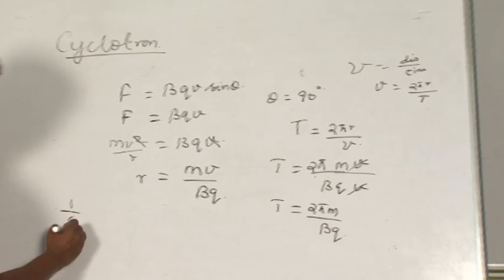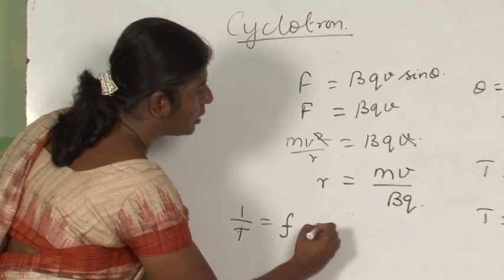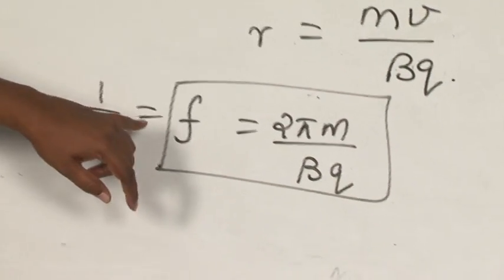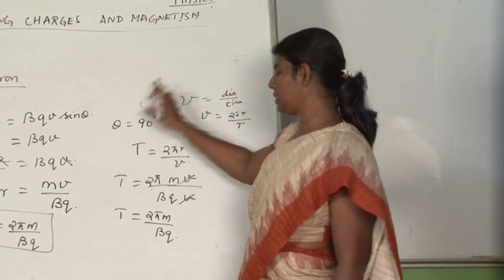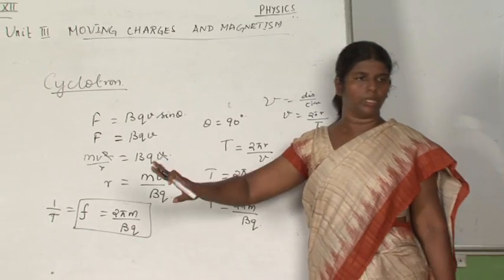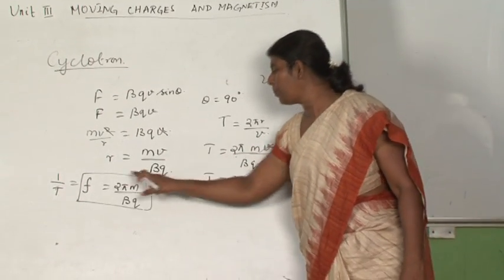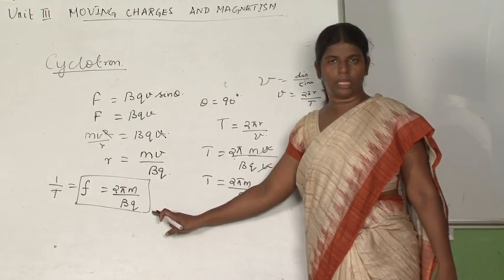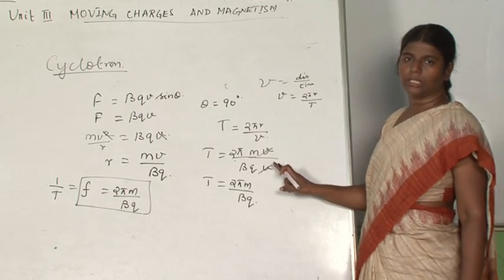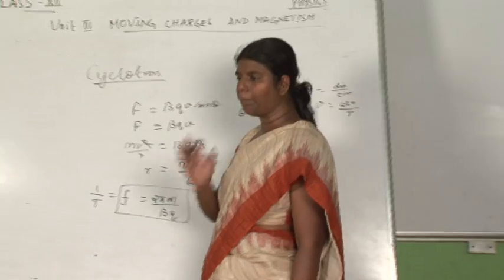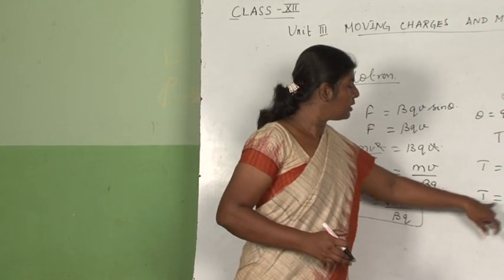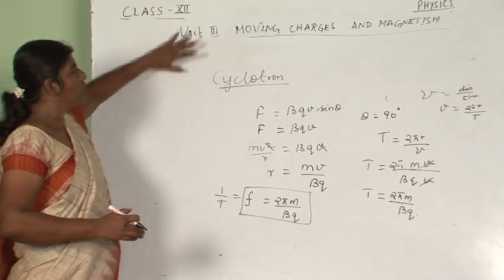What is frequency? 1 by T is your frequency, so frequency equals BQ upon 2πM. Here M is the mass of the charge accelerated, B is the magnetic field, and Q is the charge. Frequency is directly proportional to mass and inversely proportional to the magnetic field and charge. Importantly, it does not depend upon the velocity of the charged particle. This principle is used in the cyclotron.